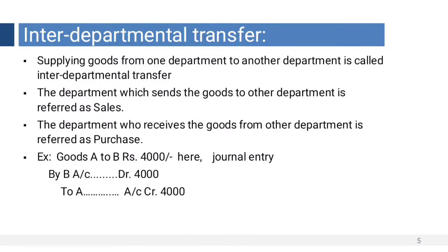Now let us see what interdepartmental transfers are. Supplying goods from one department to another department is known as an interdepartmental transfer. The department sending goods treats it as a sale, and the department receiving goods treats it as a purchase. For example, goods transferred from Department A to Department B worth 4,000 — the journal entry is: B account debit to A account. Such entries are called interdepartmental transfers.